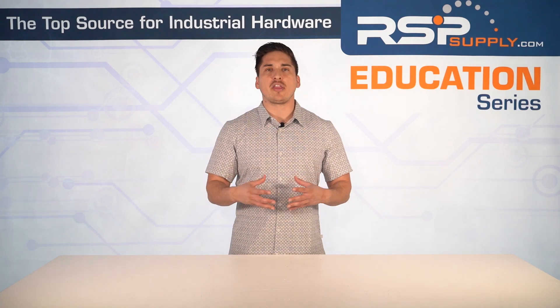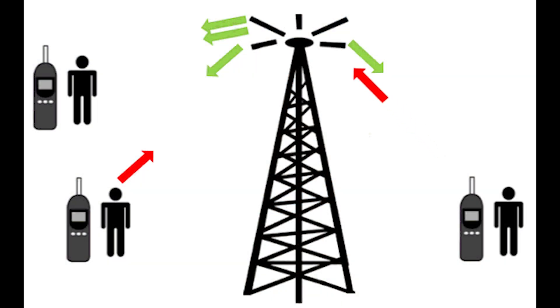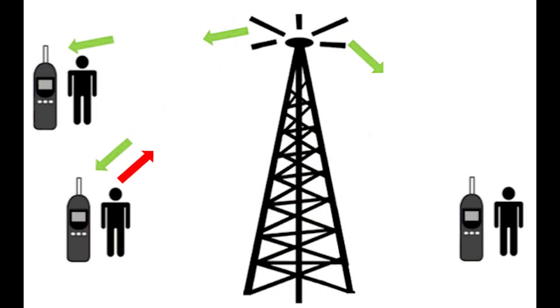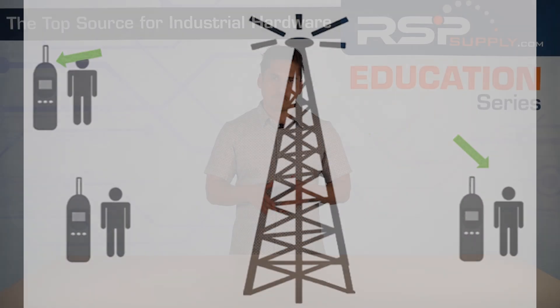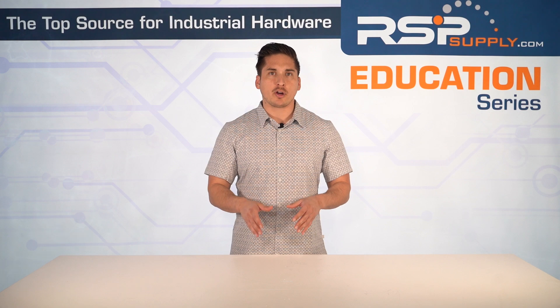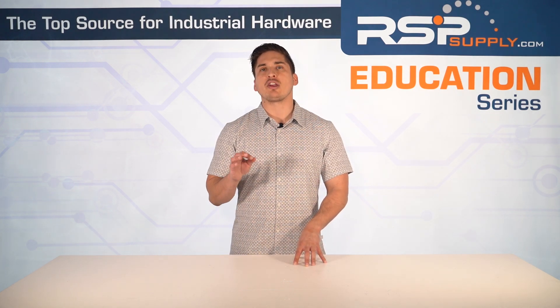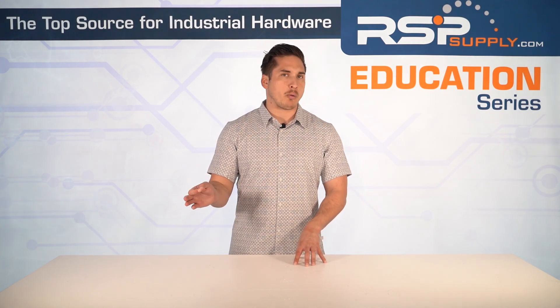A good analogy is imagining a walkie-talkie system where different workers — or in this case machines — need to communicate. If everybody speaks the same language or protocol, messages are understood and tasks get done. If different workers use different languages without translation, communication breaks down.